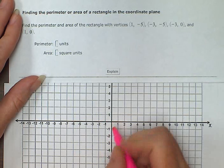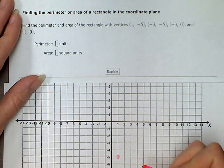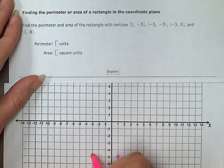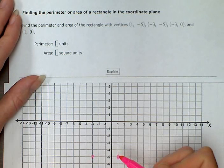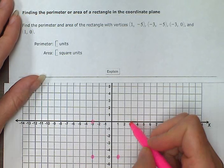1, negative 5 is the first vertex. Negative 3, negative 5, negative 3, 0, and the last one is 1, 0.